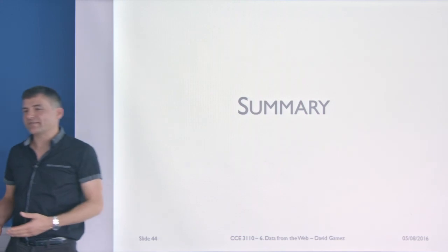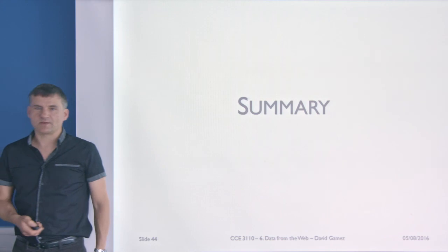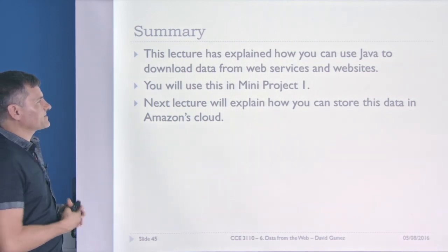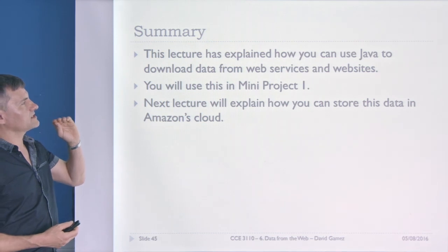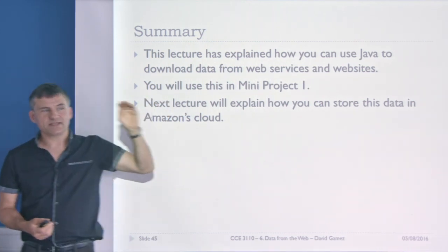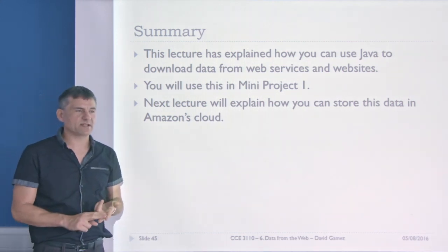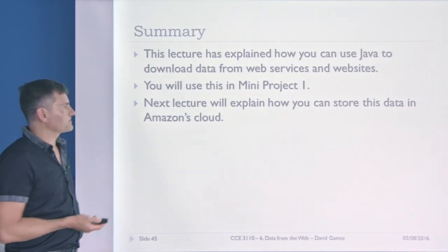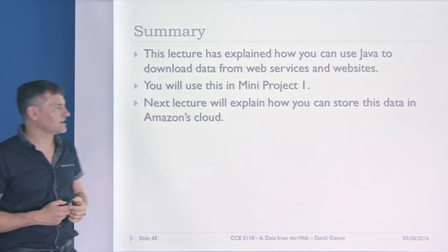The web scraping example code is in the libraries on the course website — download and adapt it. We'll have a lab session for practice with web scraping. In this lecture I've explained how to use Java to download data from web services and websites, which is what you'll need for your mini project. There are 20 marks available: 15 for downloading third-party data from one or more websites, and 5 for storing it in the cloud. Next lecture I'll explain how to store that data in the cloud using Amazon's S3 web service.